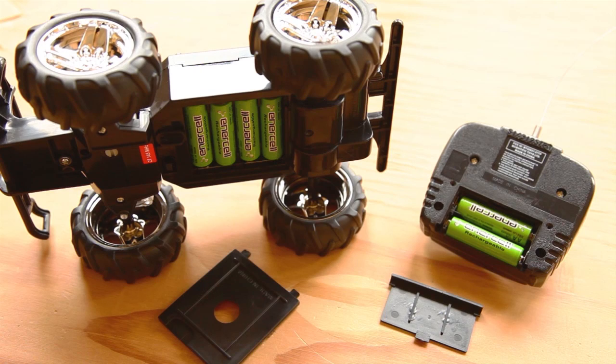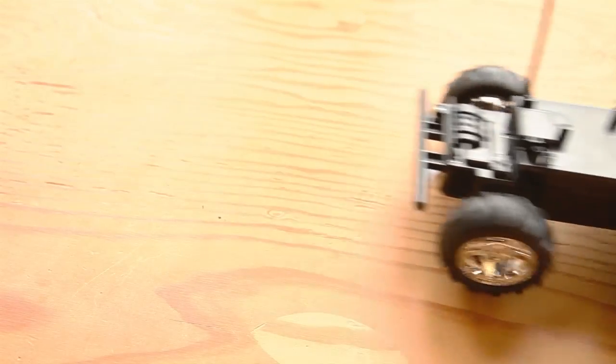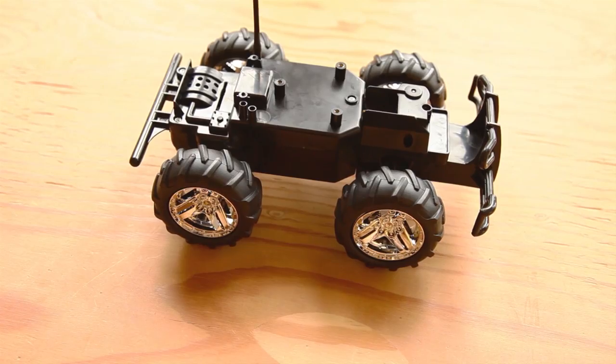Next, install batteries into the car and the controller. Though they're more expensive, we're using nickel metal hydride rechargeables because they have greater capacity than alkaline cells and they cut down on batteries headed to the landfill. Turn on the car, grab the controller, and try it out. Note the controller uses no power when it isn't transmitting, so it has no on-off switch.